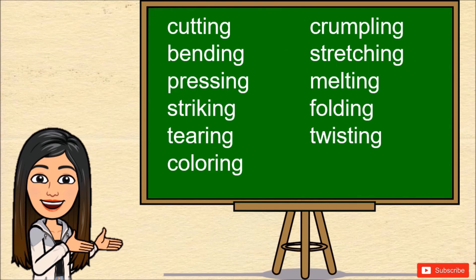So remember: cutting, bending, pressing, striking, tearing, coloring, crumpling, stretching, melting, folding, and twisting are just some of the ways by which we could change the appearance of solid materials.